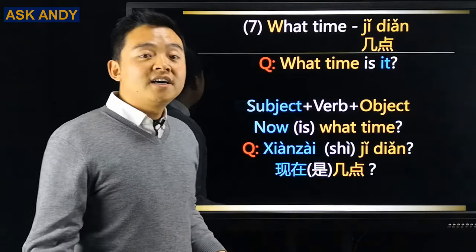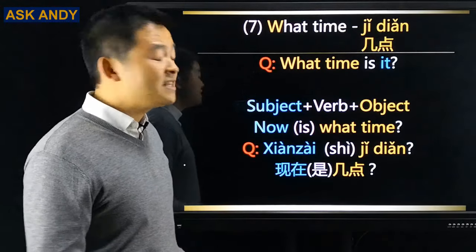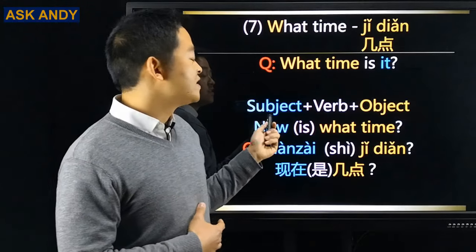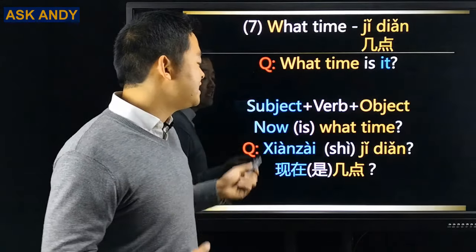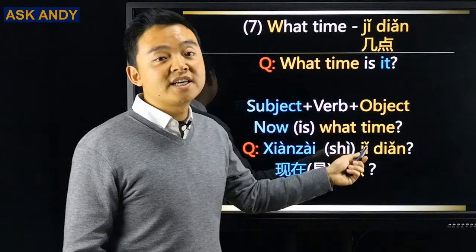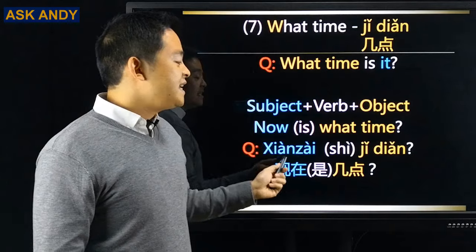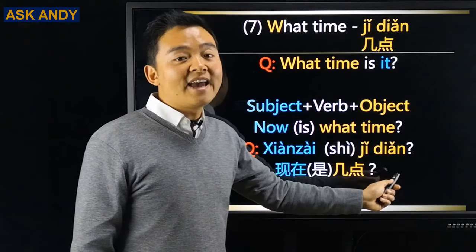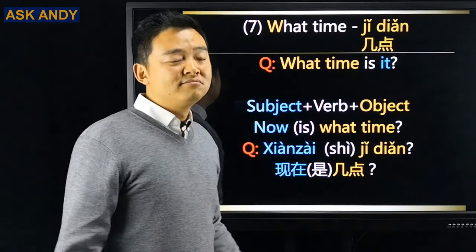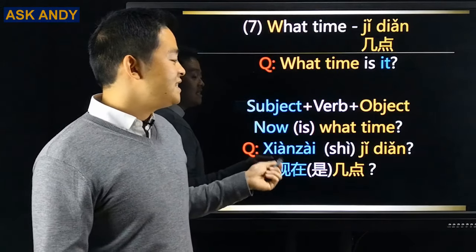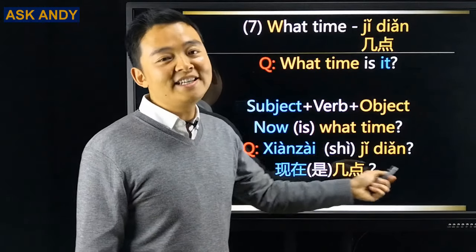Number seven: what time — 几点. 'What time is it?' In Chinese: now / is / what time → 现在是几点? But you'll more commonly hear it without 是: 现在几点?